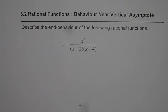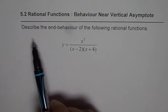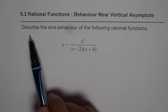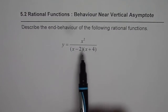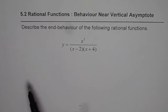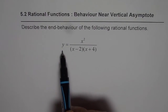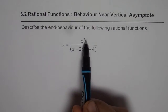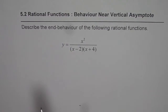I'm Anil Kumar and in this video we will learn characteristics of rational functions. We'll discuss two things: behavior near the vertical asymptotes, and the end behavior of the following rational function — y equals x squared divided by x minus 2 times x plus 4.